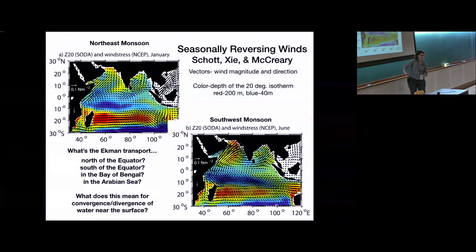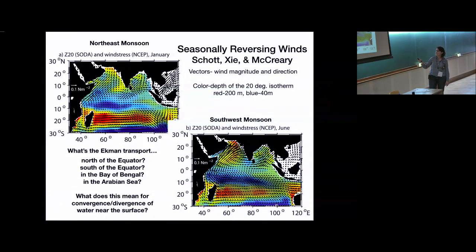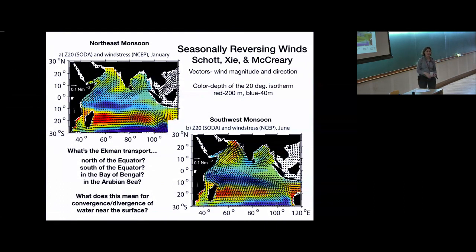There's also convergence leading to downwelling, where you see a very deep 20-degree isotherm. In the Arabian Sea, there are very strong winds and a clear deepening of the 20-degree isotherm. The Ekman transports are to the right of the winds, and as you move out of the Arabian Sea they get weaker, creating a curl in the wind stress. If you apply the right-hand rule, you do indeed have downward Ekman motion on average in the Arabian Sea.